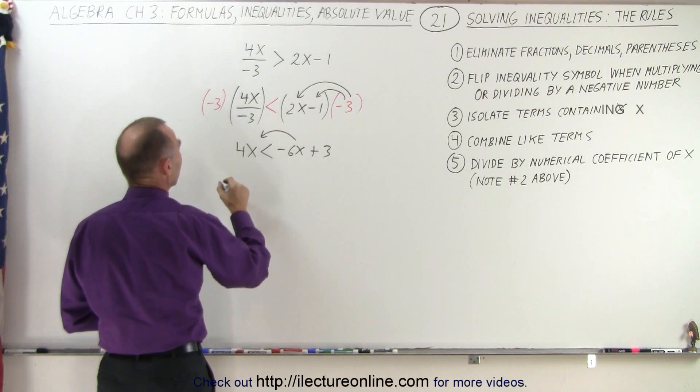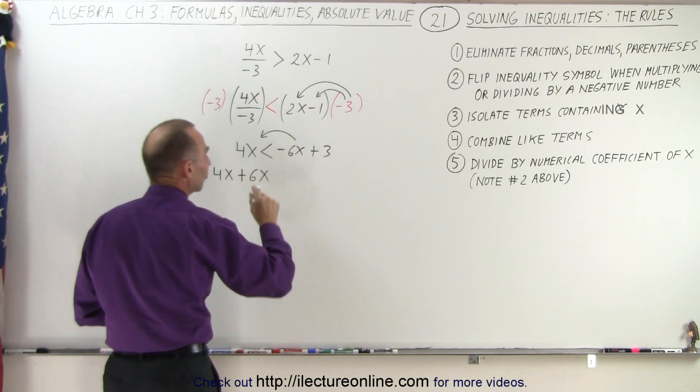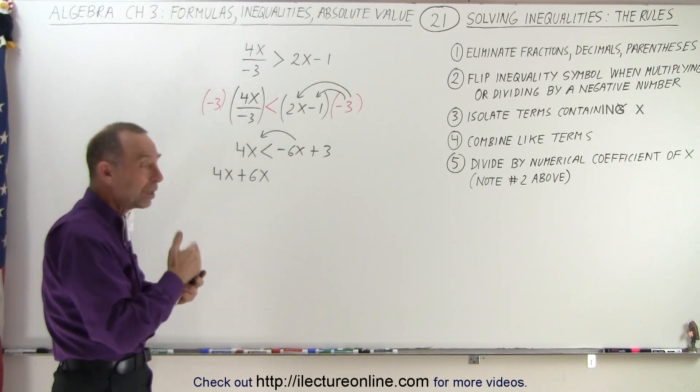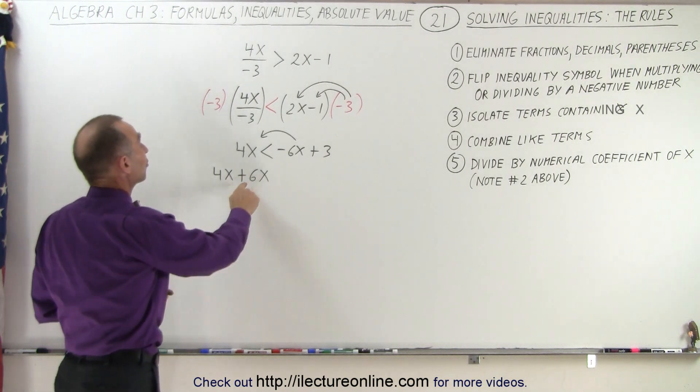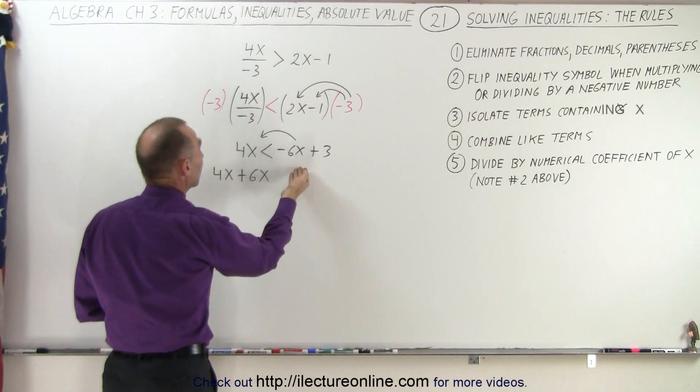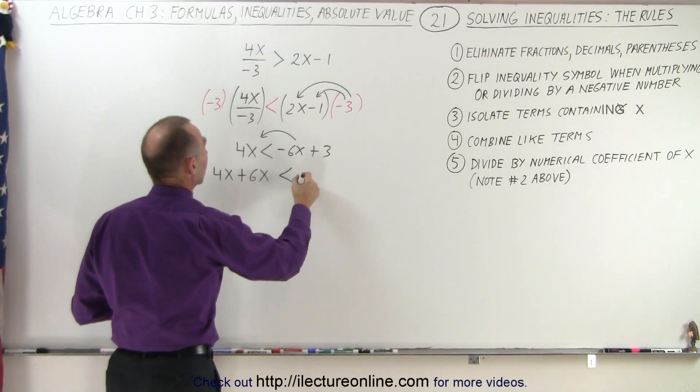So I'm going to move this over here, end up with 4x plus 6x. So just like with equations, when you cross the inequality sign, just like when you cross the equal sign, you must change the sign. So 4x smaller than negative 6x plus 3, you move the negative 6 over, it becomes a plus 6x smaller than 3.